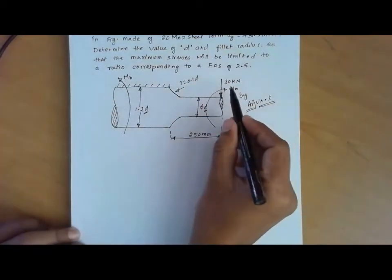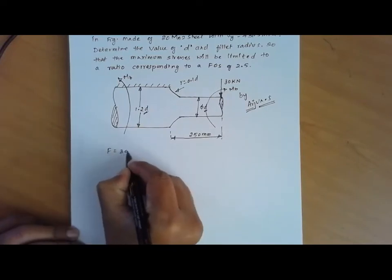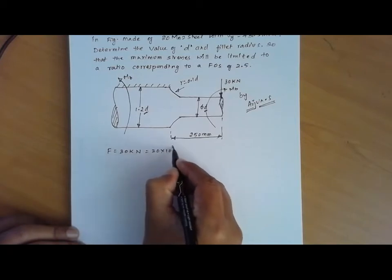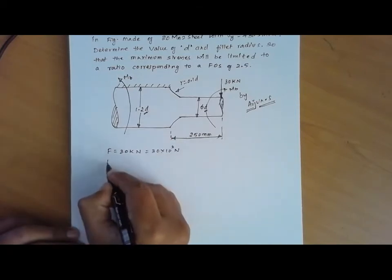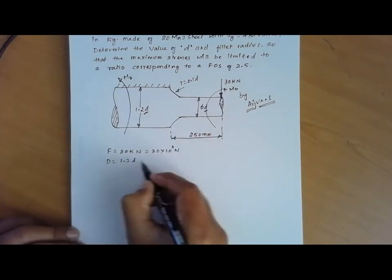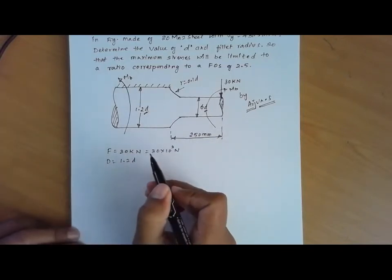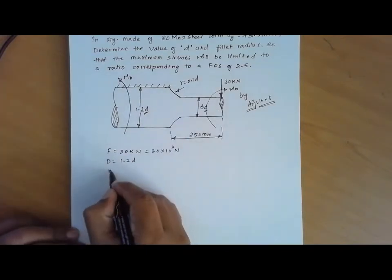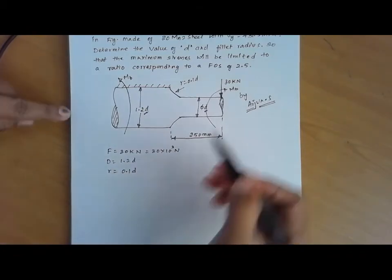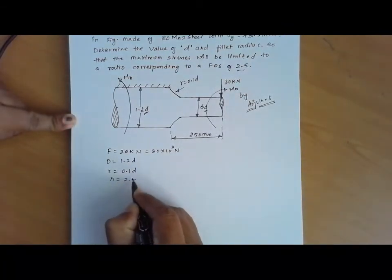Let us write down the given parameters. The transverse force F is equal to 30 kN, which we convert to 30 × 10³ N. Capital D is 1.2 times small d, and small d is D. The fillet radius is given as 0.1 times D. The factor of safety is given as 2.5.